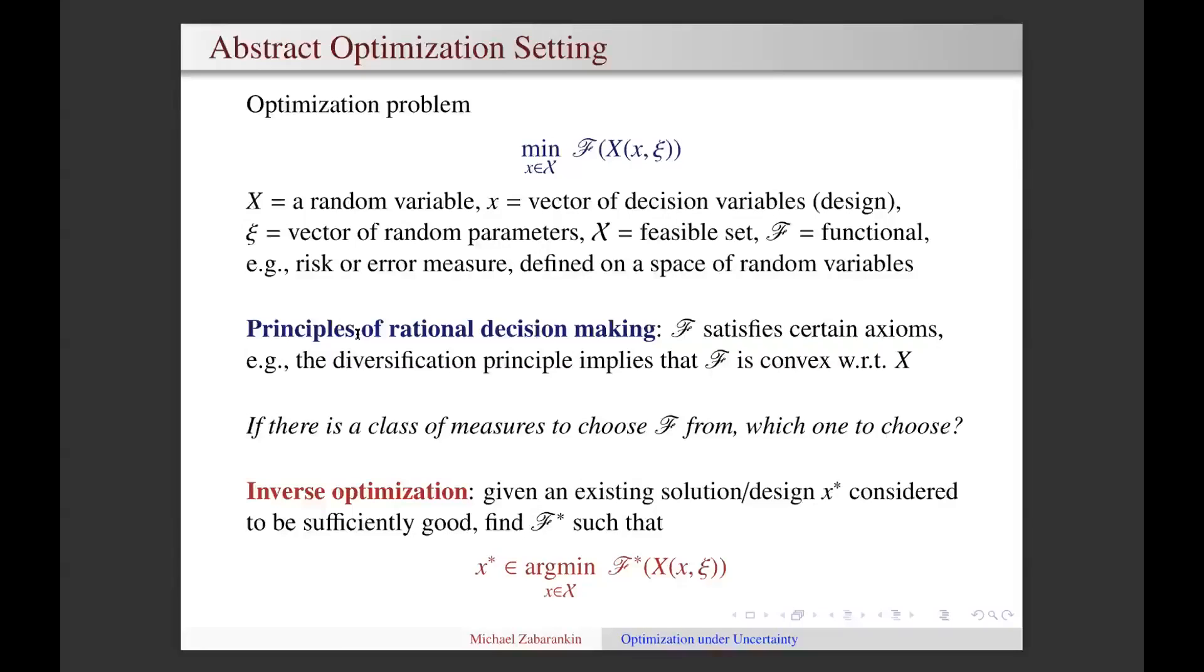For example, portfolio weights should sum up into one, and if short positions are not allowed, the portfolio weights should be non-negative. In general, we can just consider that decision variables belong to some feasible set capital X, which is typically assumed to be convex. The central element in an optimization problem is its objective function, which in this case is a functional F defined on a space of random variables and which captures the aspect of uncertainty appropriate for a given application.